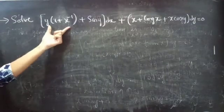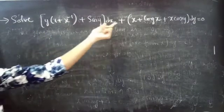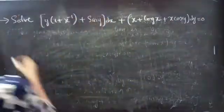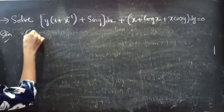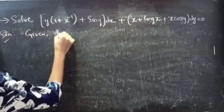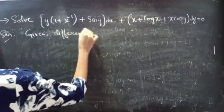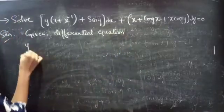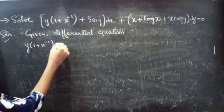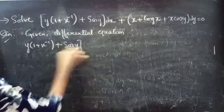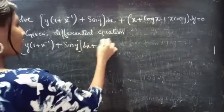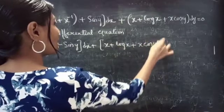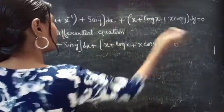Problem: solve y into (1 plus x inverse plus sin y) into dx plus (x plus log x plus x cos y) into dy equals to 0.